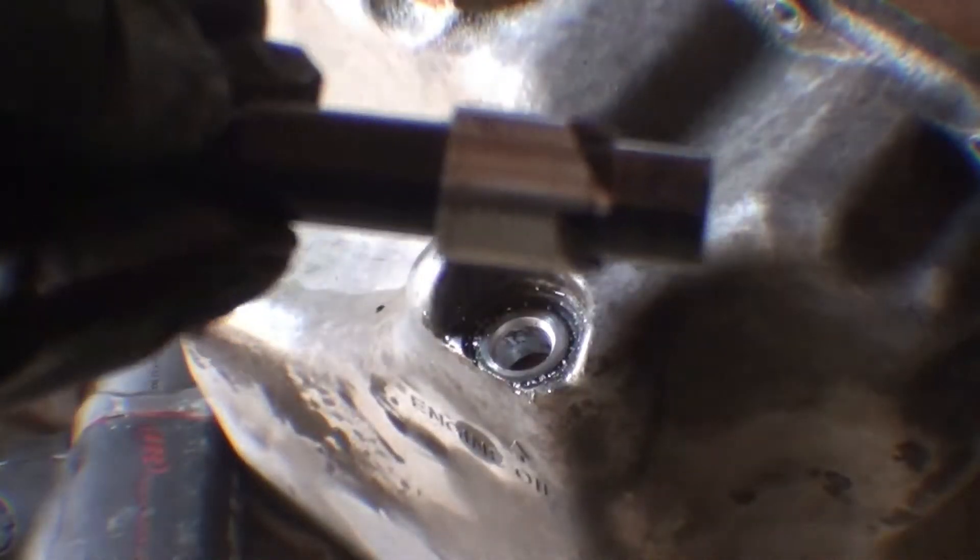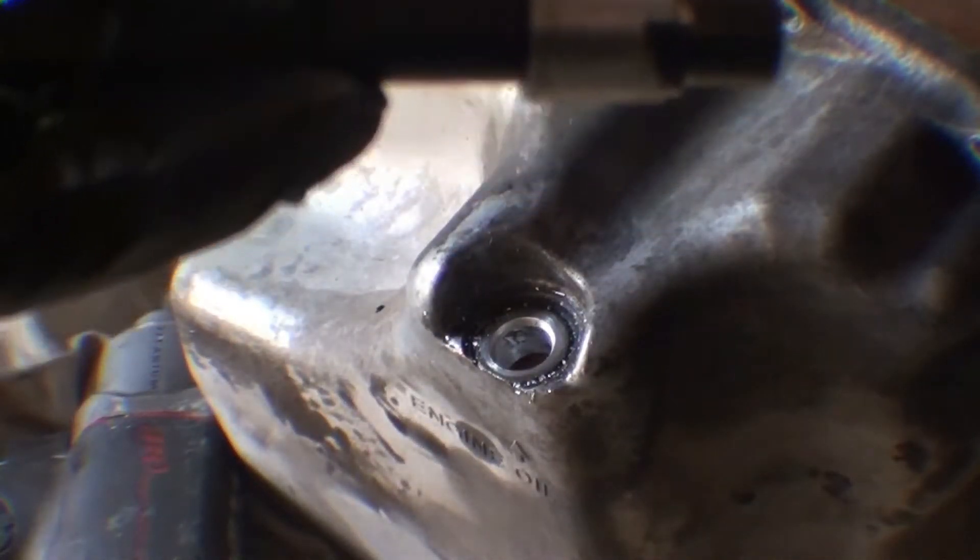Now countersink the drilled hole with the supplied tool. I did this by hand because the aluminum is a soft material.